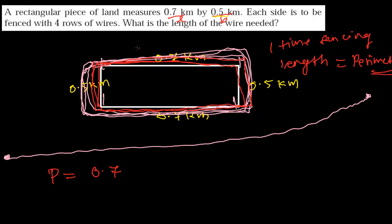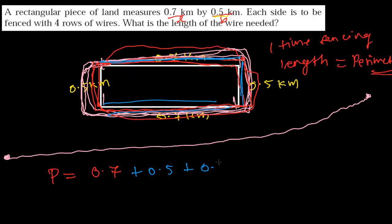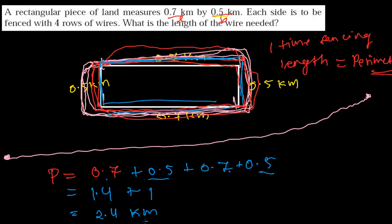The perimeter is simply the addition of all the sides. So first 0.7 kilometer, then 0.5 kilometer, then 0.7 kilometer, and then 0.5 kilometer again. So 0.7 and 0.7 gives 1.4, and 0.5 and 0.5 gives 1.0, altogether that is 2.4 kilometers.